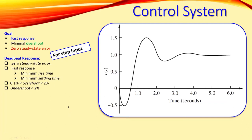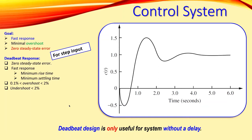One important note: deadbeat response is not applicable for a system with a delay. Deadbeat design is only useful for a system without a delay. If the delay is very small compared to the time constant — for example, a delay of one second with a time constant of 10 or 20 seconds — that may still be acceptable. But if the delay is comparable to the time constant, such as a delay of seven seconds with a time constant of 10 seconds, deadbeat design will not be applicable.